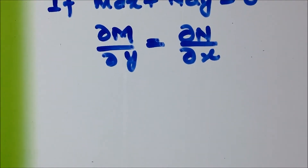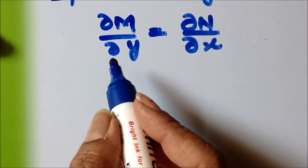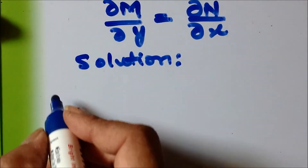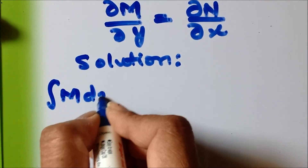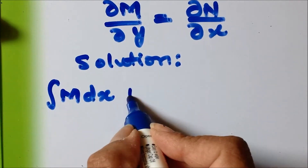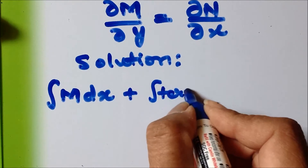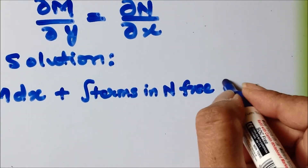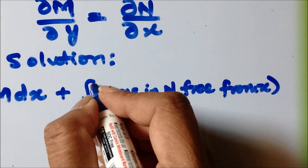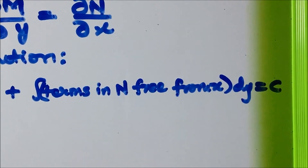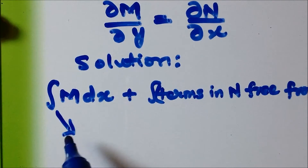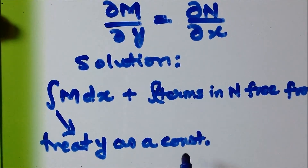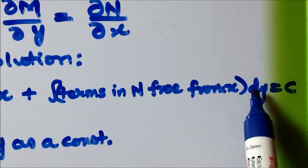Now let us see how this differential equation is to be solved. The solution of the differential equation is given like this: integration of m dx, where we will be treating y as a constant, plus integration of terms in n free from x, dy is equal to c. So first we will integrate m dx treating y as a constant, then integrate the terms in n free from x, dy, equal to c.